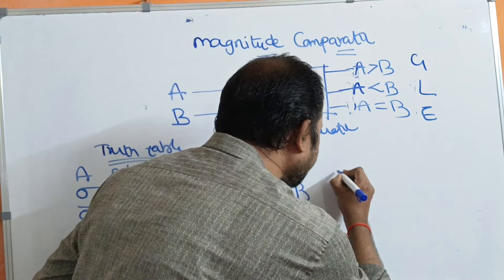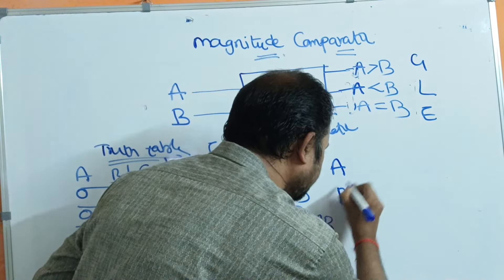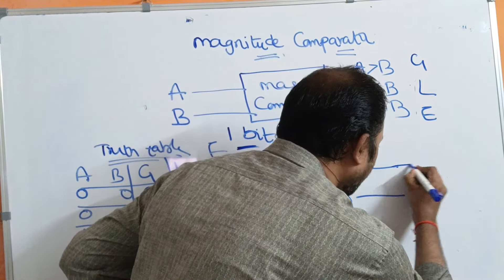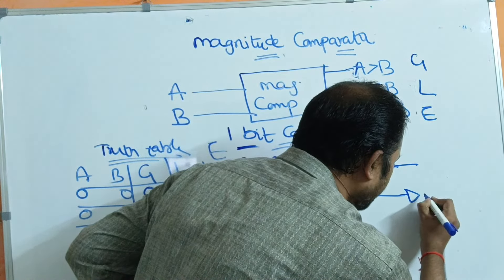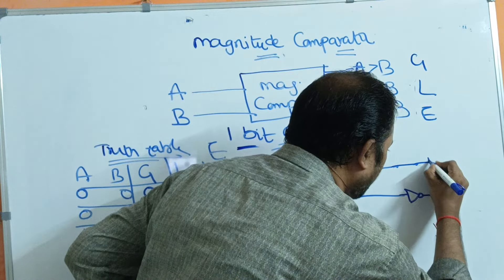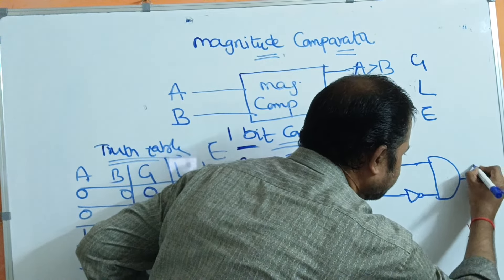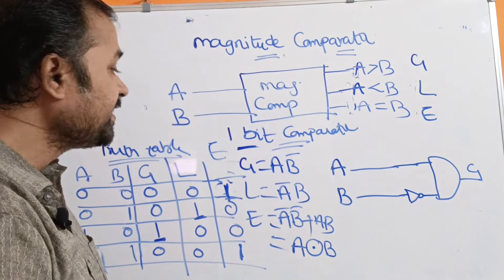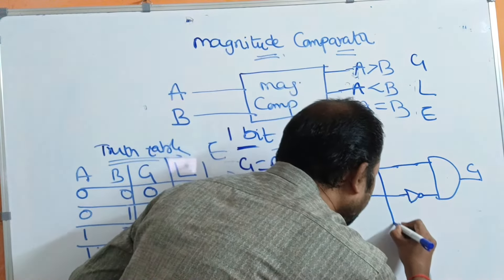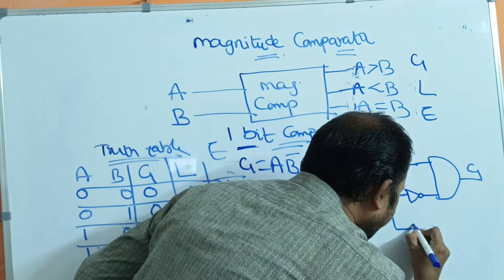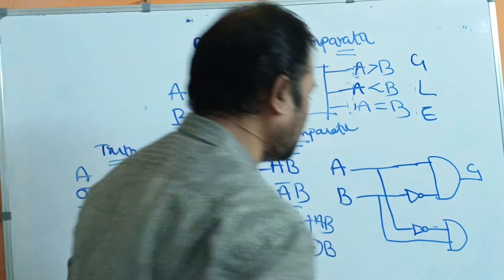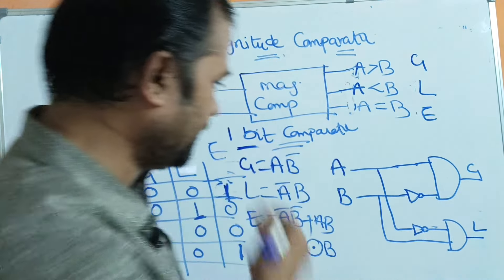Now we have to draw the logic circuit for greater than, less than, and equal to. The inputs are A and B. For G = A·B̄, we need to complement B using a NOT gate and then perform an AND operation — this gives G. For L = Ā·B, we complement A and perform an AND operation with B — this gives L.